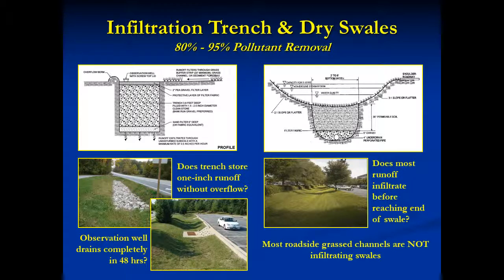With infiltration trenches, look for indications that it can no longer treat the first inch of runoff. This is best done with the rain gauge and float method you'll see a few slides from now. With dry swales, look for evidence that the surface is clogged — wet spots when several days have passed since the last rain, or wetland vegetation.